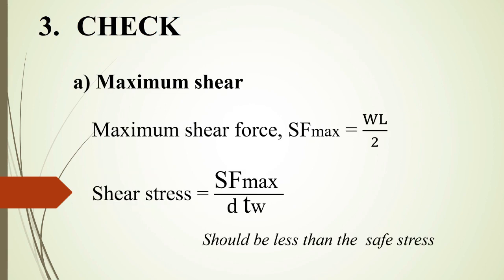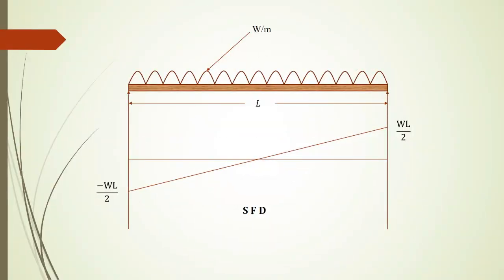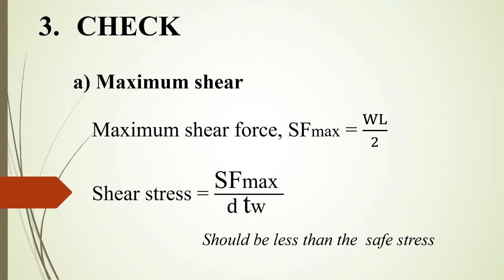Now I will check the second step — the maximum shear and maximum deflection. For a simply supported beam with a uniformly distributed load, the shear force diagram shows positive and negative values. The maximum shear is WL/2. We then calculate the maximum shear stress, which is maximum shear force divided by d × tw. We refer to the steel table SP6 for section properties.